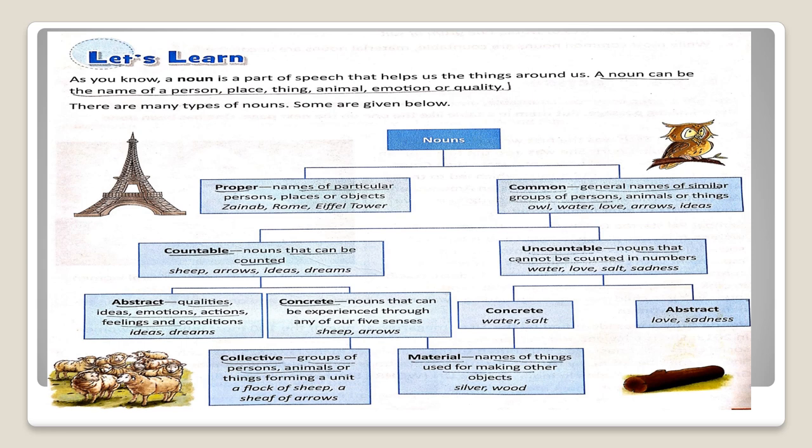First one, proper noun. Names of particular persons, places or objects. For example, Zainab, Rome, Eiffel Tower.